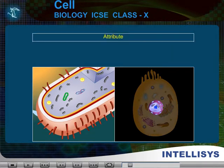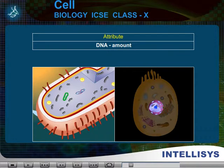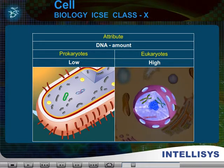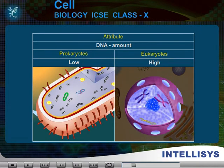Attribute: DNA amount. In prokaryotes, it is low. In eukaryotes, it is high.